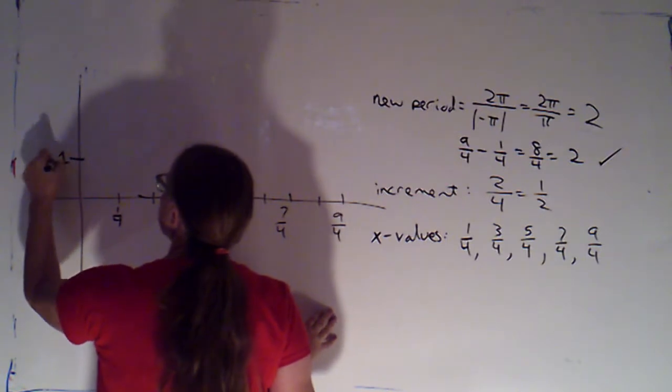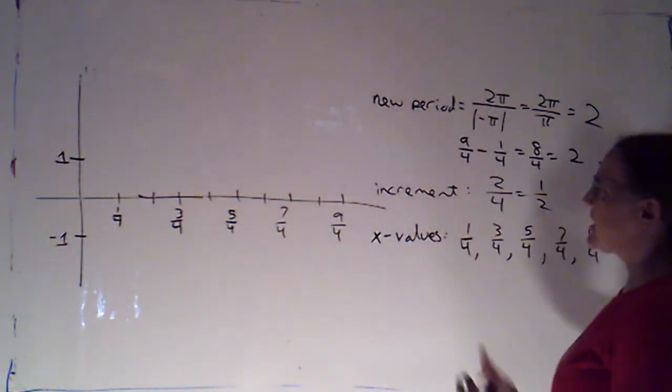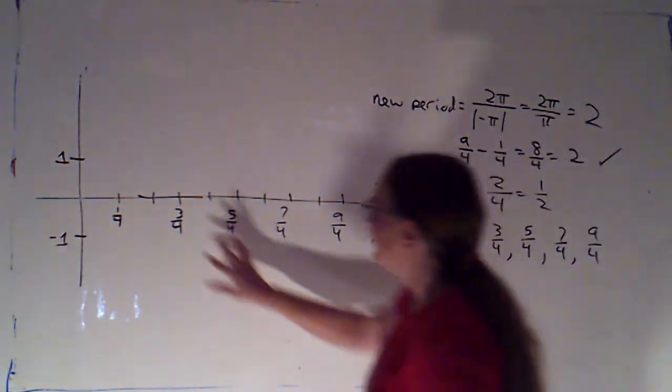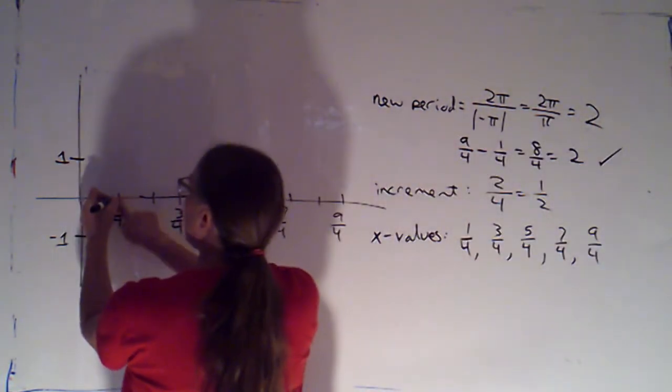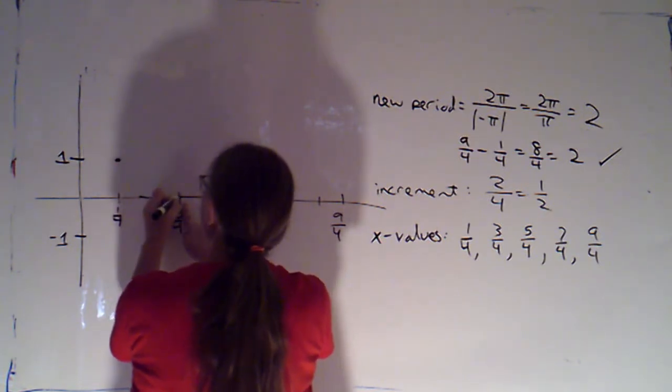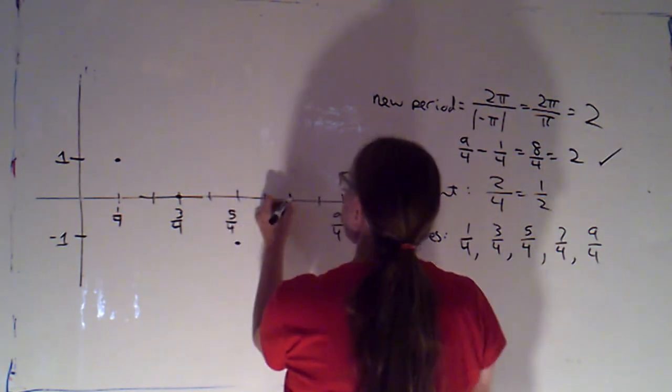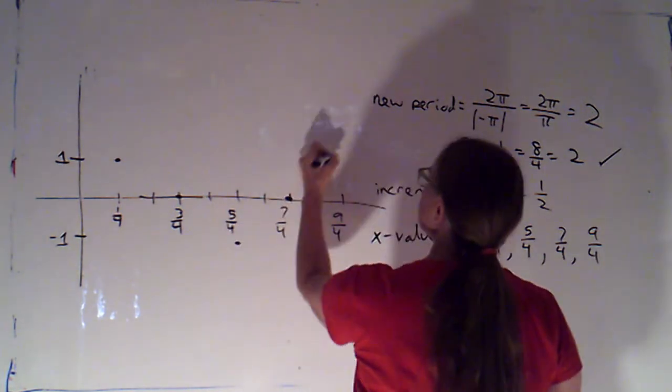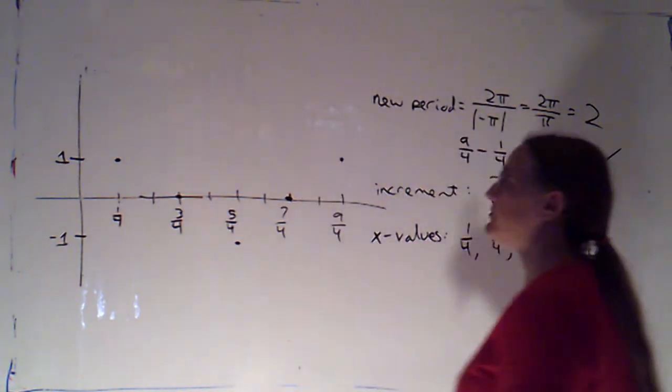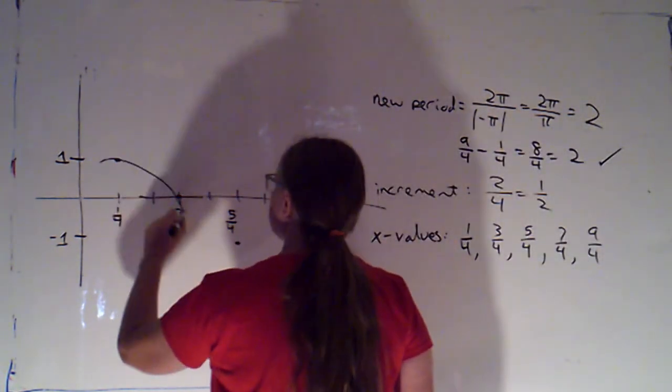Then, the high value is 1. The low value is negative 1. And this was a cosine graph. I've erased that. But cosine starts high. So, at 1 fourths, we're at a high value. At our next important point, we're at a 0. At 5 fourths, we'll be down at negative 1. At 7 fourths, we'll be back at 0. And at 9 fourths, we'll be up at 1. So, I can play connect the dots.